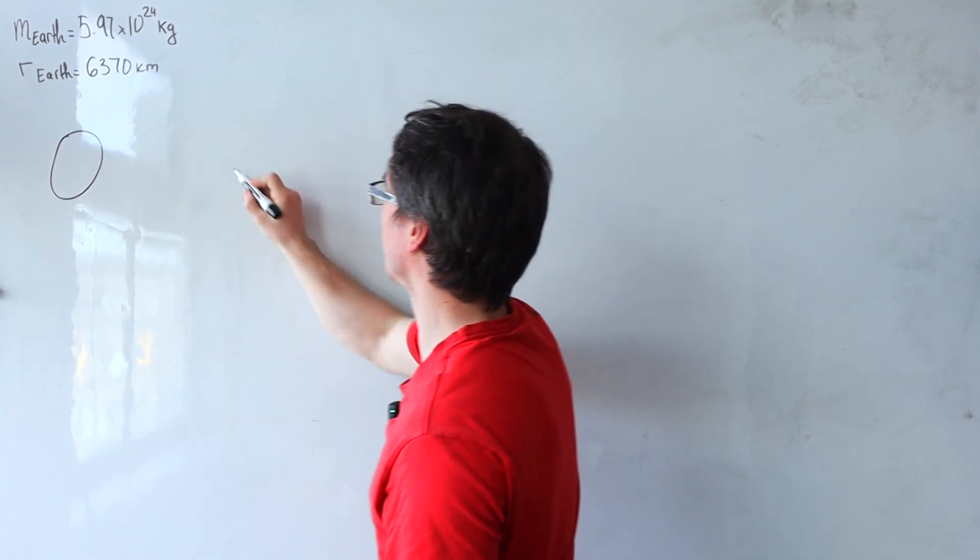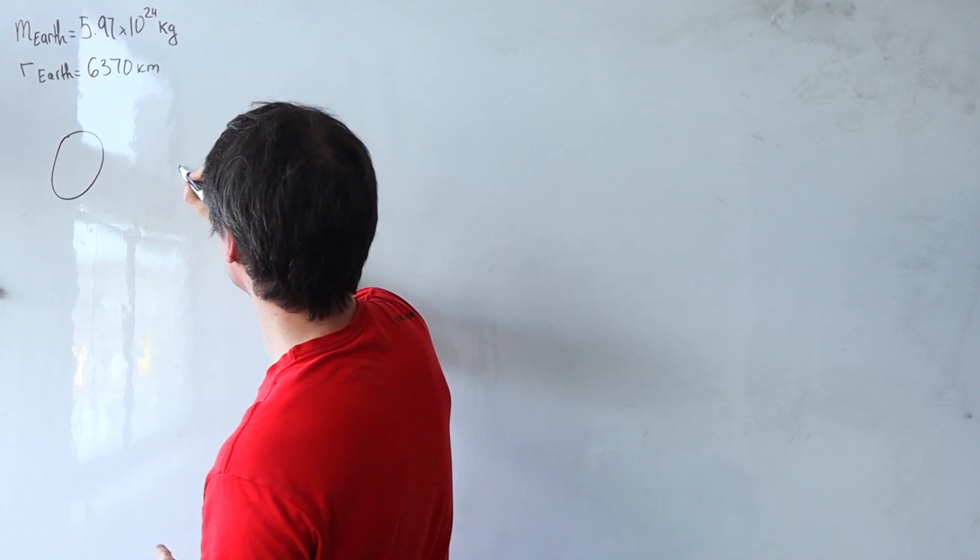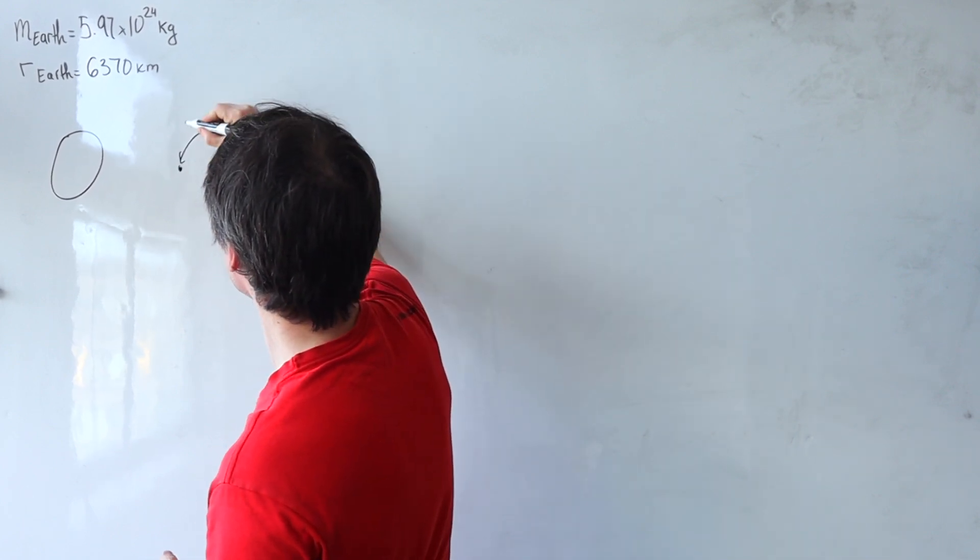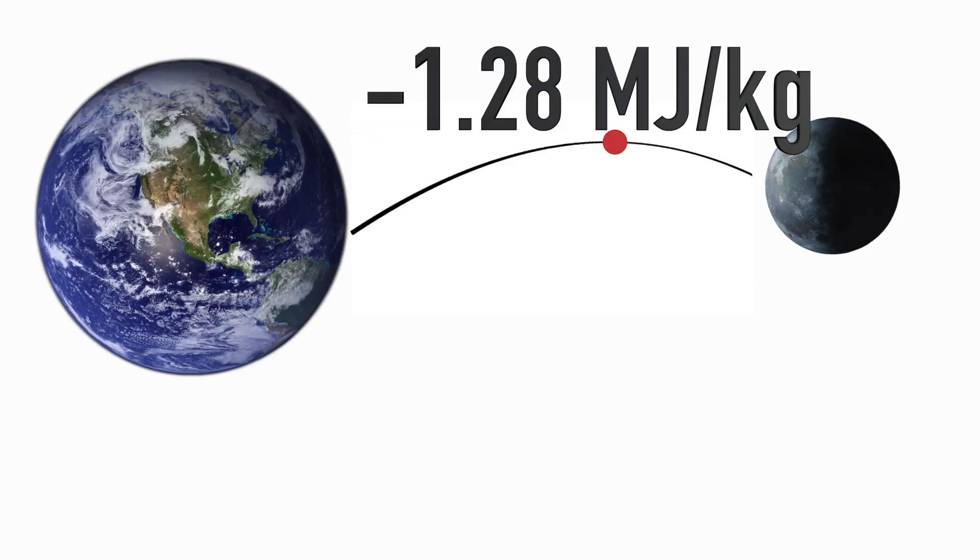So here is the Earth and here is the Moon. The maximum gravitational potential between them, let's say it's over here, is minus 1.28 megajoules per kilogram.